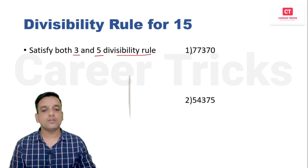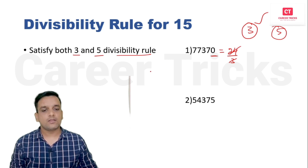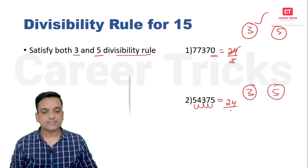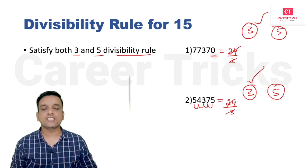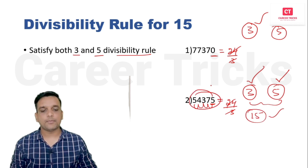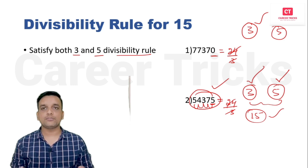Divisibility rule for 15: the number must satisfy both rule 3 and rule 5. Add all digits: 7 + 7 + 7 + 7 = 28 + 3 = ... = 24. Is 24 divisible by 3? Yes — rule 3 satisfied. Unit digit is 0 — rule 5 satisfied. For a second example: 5 + 3 + 3 + 7 + 5 = 24, divisible by 3; unit digit is 5, divisible by 5. Both satisfied — the number is divisible by 15. This is one of the easiest tricks in the divisibility rules from 1 to 15.